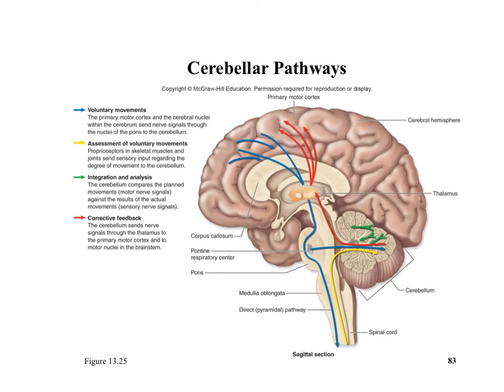The cerebellum integrates all these movements. The primary motor cortex is in the frontal lobe and the sensory cortex is in the parietal lobe. Inputs from both are integrated through the cerebellum and connected with respiration and movements down the spinal cord.